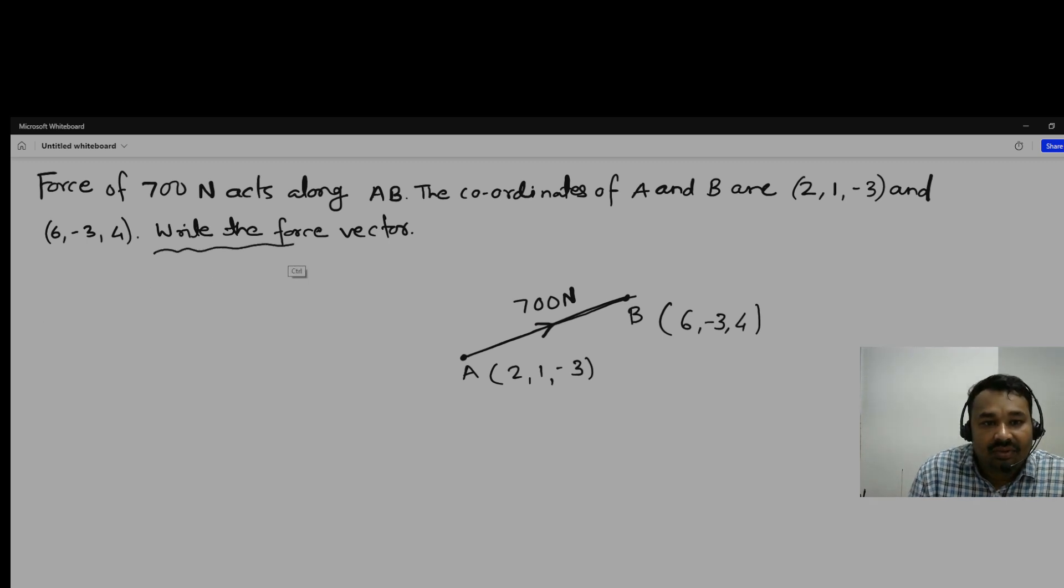We have to represent this force magnitude in the force vector form. So what we have to do? F_AB vector equals F_AB magnitude multiplied by the unit vector e_AB. This F_AB is equal to 700 Newton, given in the question.